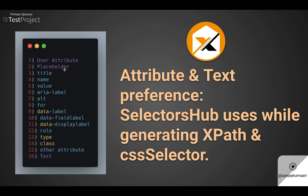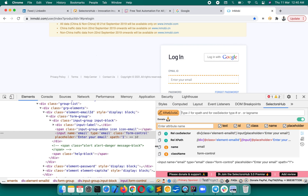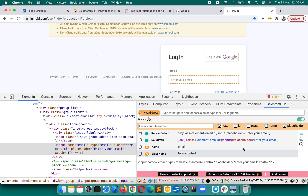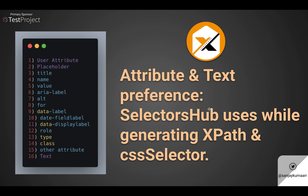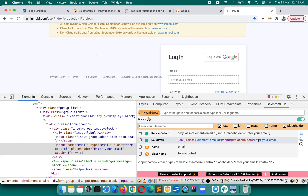By default, placeholder is the very first preference. You can see SelectorsHub is generating XPath for this element giving first preference to placeholder, even though name, type, and class are also present. SelectorsHub considers placeholder the top default priority, followed by title, then name, then value, then aria-label, and so on.